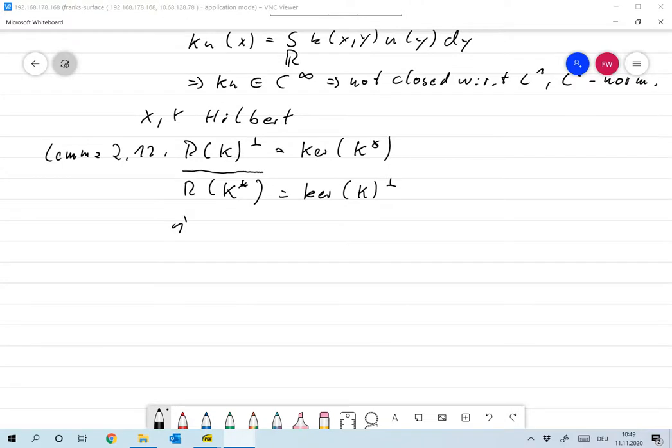For the first one, assume that y is in the kernel of the adjoint of K. Then obviously, we have that K star y scalar product with x is 0 for all x in X. I mean, this is clear because K star y is 0. But that implies that y scalar product with Kx is 0 from the definition of the adjoint.